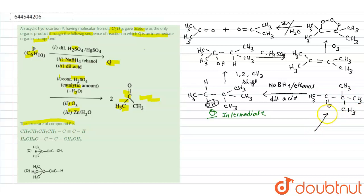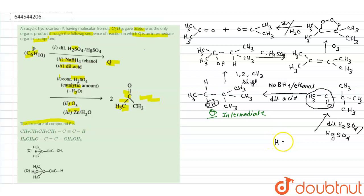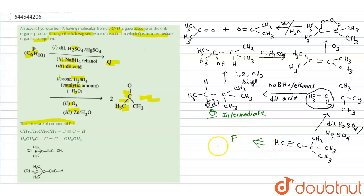With the addition of dilute H2SO4 and HgSO4 in the reverse step, this keto group is converted back into an alkyne group. The product is compound P: CH≡C-C(CH3)2-CH3. This is compound P whose molecular formula is C6H10, containing 6 carbon atoms.